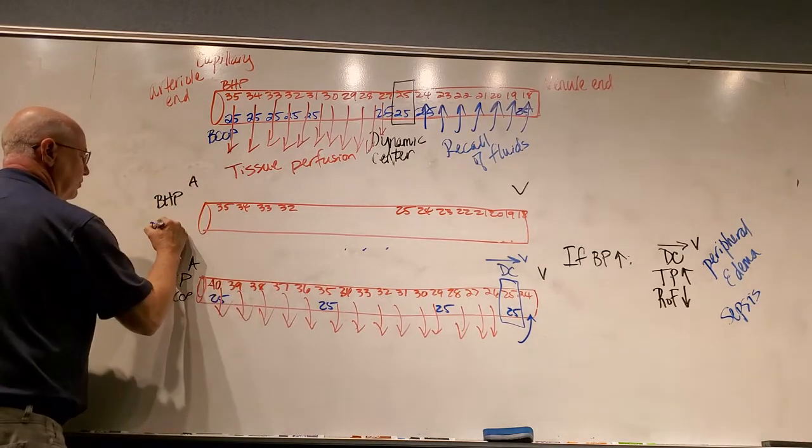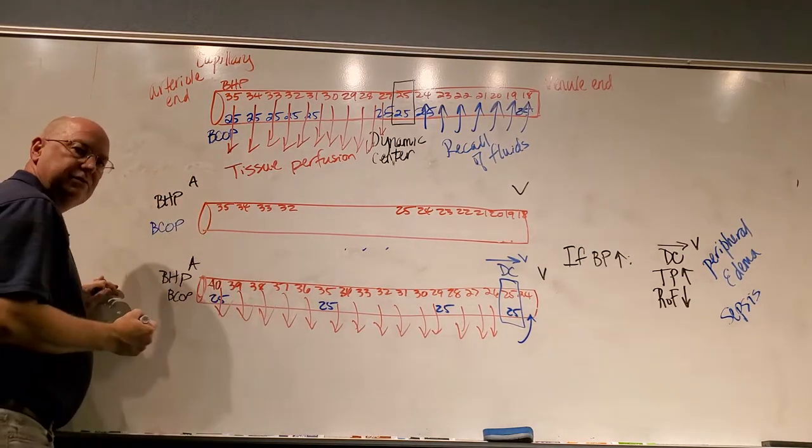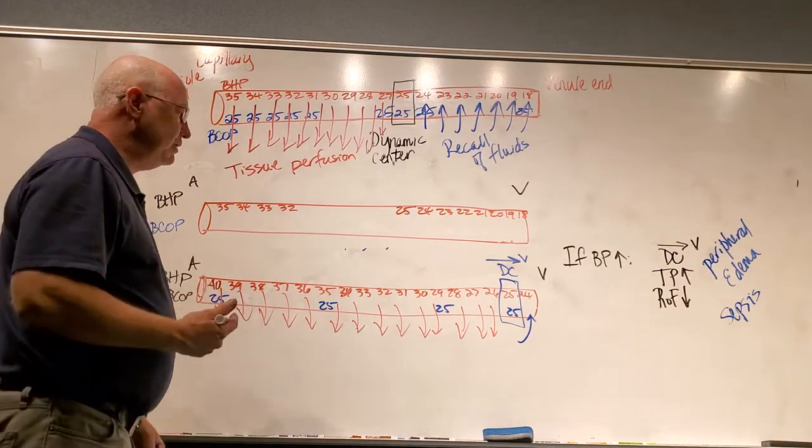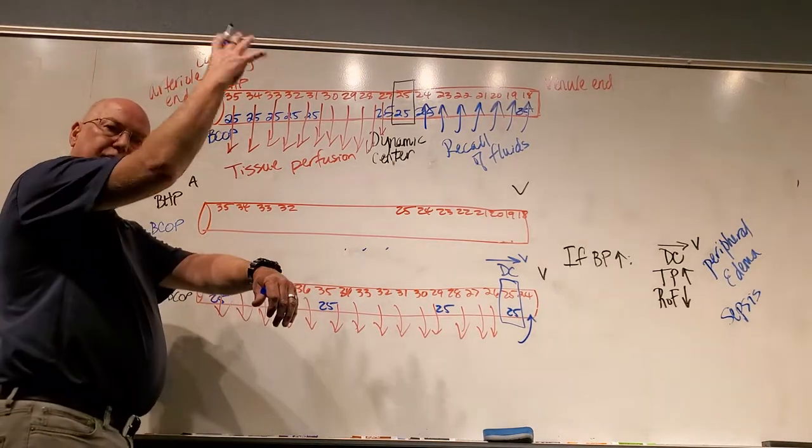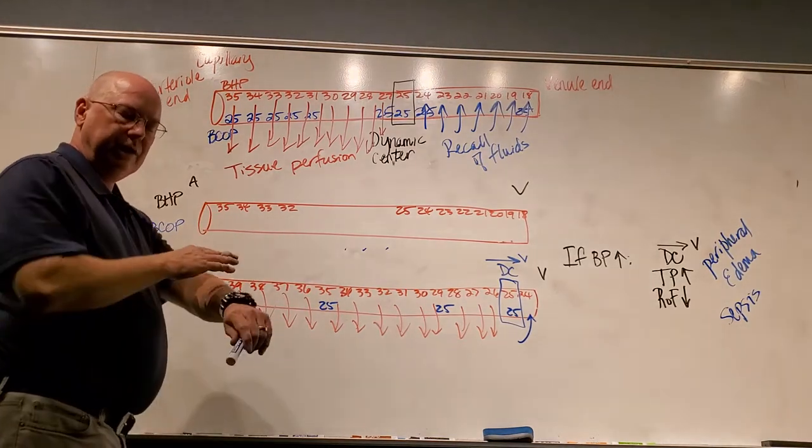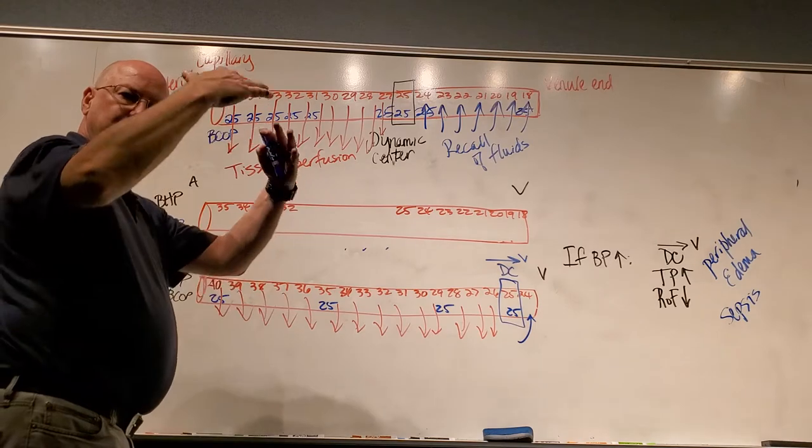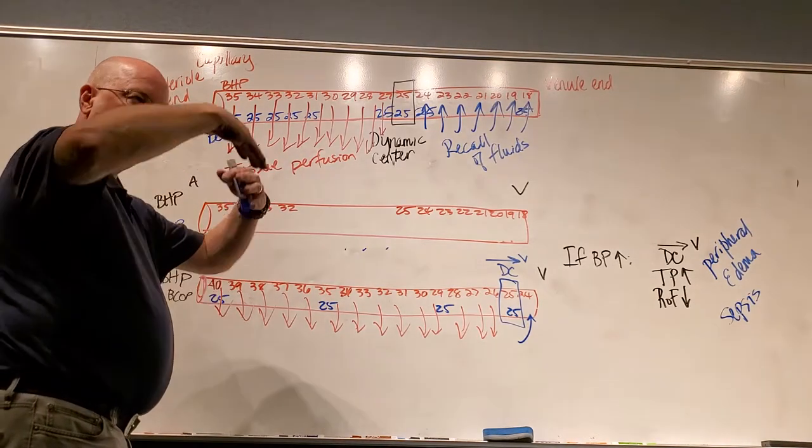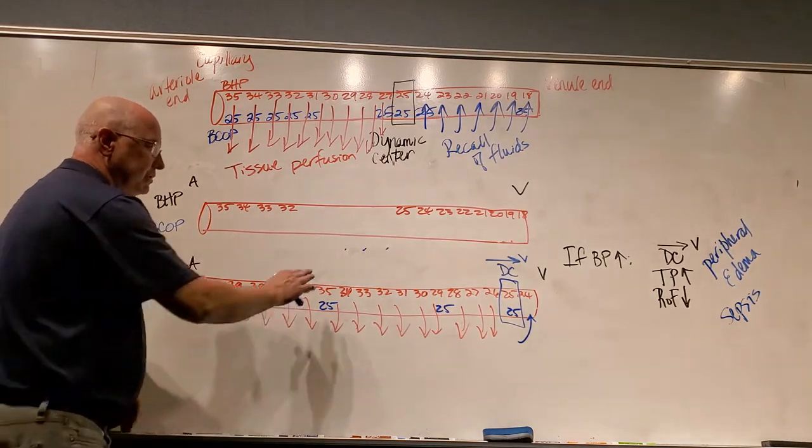If my blood colloid osmotic pressure is compromised, liver disease, starvation, not eating enough protein, or if you get burned and all those proteins can escape, because remember, one of the layers of the basement membrane traps large molecules in the body. If we burn our skin off and we lose a lot of that protein, it can lead to protein deficiency.